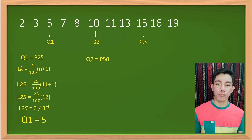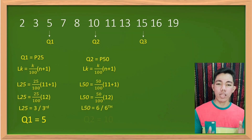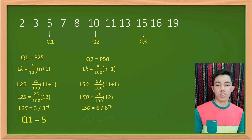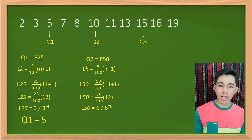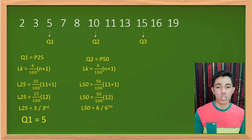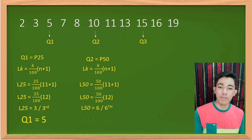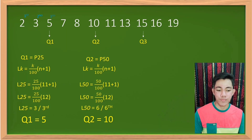Why is Q2 equal to 10? Using the same formula: Q2 is the 50th percentile, so L₅₀ = (50/100) × (11+1) = (50/100) × 12 = 6. That means Q2 is the value at the 6th position in the data set, which is 10.